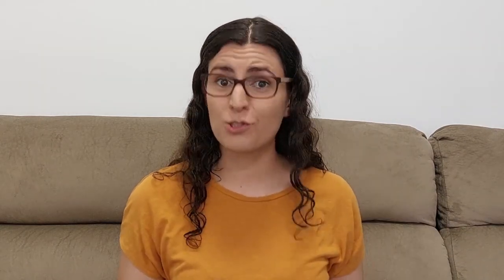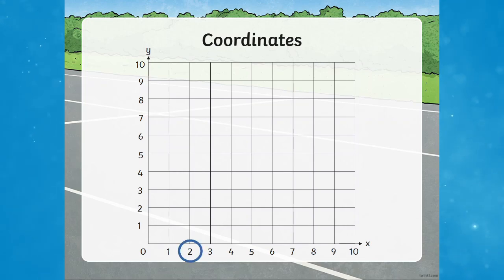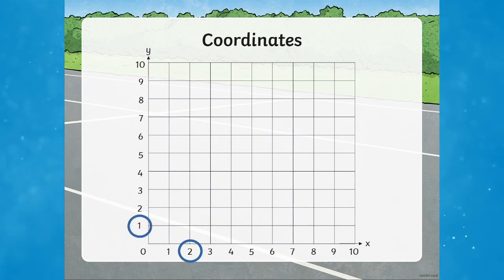First let's talk quickly about how to read coordinates. The horizontal line is the x-axis and the vertical line is the y-axis. When given a set of coordinates, the first number is how far along the x-axis you go and the second number is how far up the y-axis you go. Following these directions should lead you to the correct point on a graph.